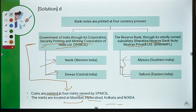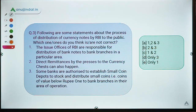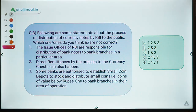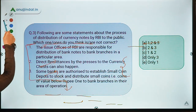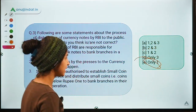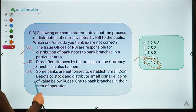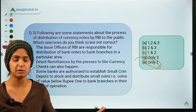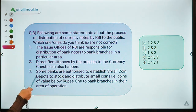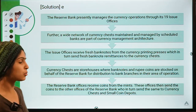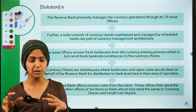Moving ahead — some statements are given about the process of distribution of currency notes by RBI to the public, and you have to identify which one or ones are not correct. Be careful: you have to select the incorrect statement, not the correct one. The correct option for this question is option E — only one statement is the incorrect answer, whereas the rest two statements are correct.